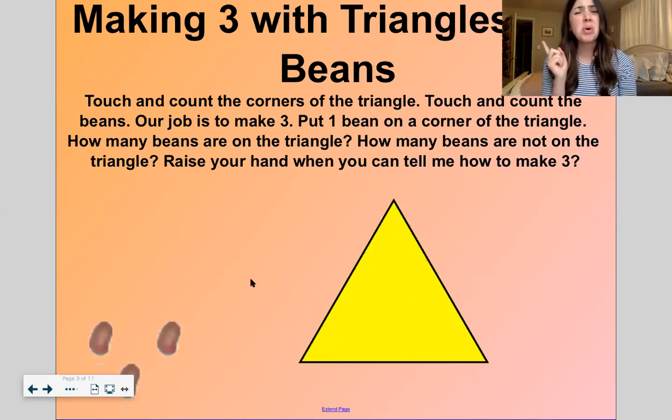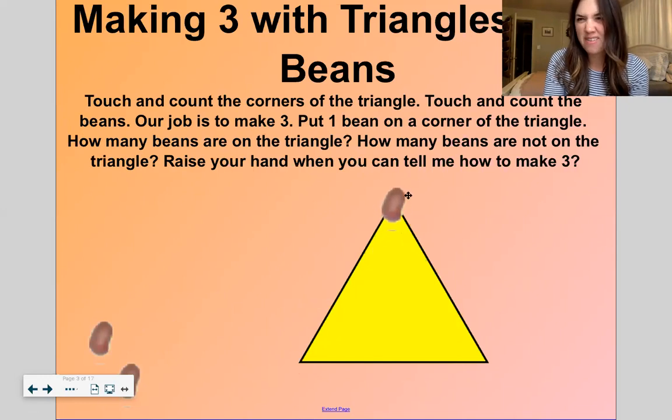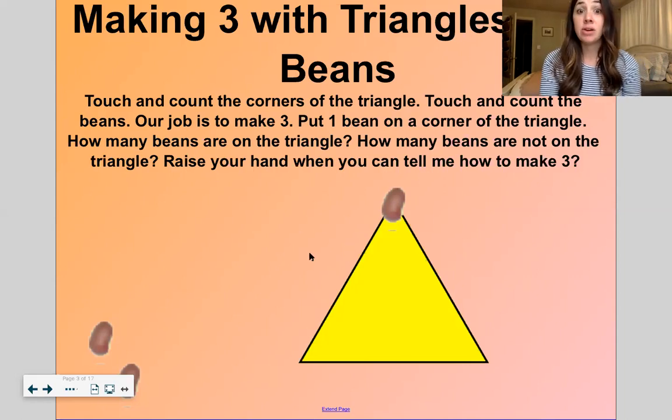So now let's just put one bean on a corner. And this corner, a fancy way to say the name of a corner is a vertex. Put one bean on the corner. Oh, we did that. How many beans are on the triangle? Just one. How many beans are not on the triangle? Two.